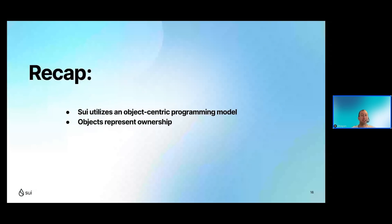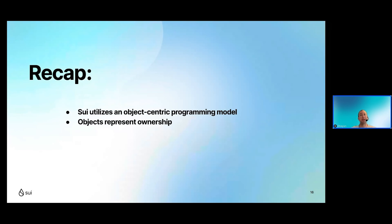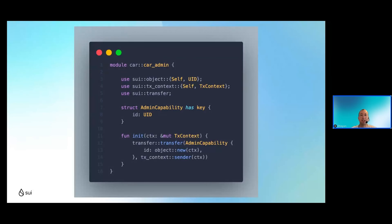To recap: Sui utilizes an object-centric programming model, and objects represent ownership. That's the biggest takeaway from this lesson — think of objects as representing ownership. Now let's look at another smart contract example. In that same sources directory, create a new file called 'car_admin.move' and populate it with the following lines.